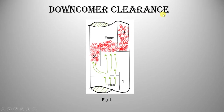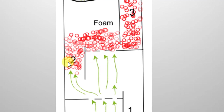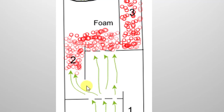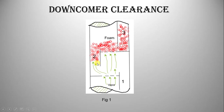The other cause of flooding is downcomer clearance. Referring to figure 1, downcomer 2 is flooded. The cause is loss of downcomer seal — that is, the height of the weir is below the bottom edge of the downcomer. This lack of seal allows the vapor to flow up into the downcomer. The vapor pushes liquid up onto the tray above, which causes flooding.